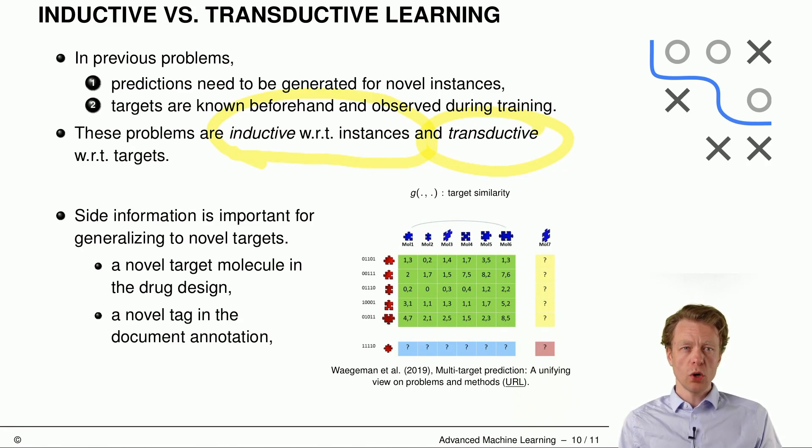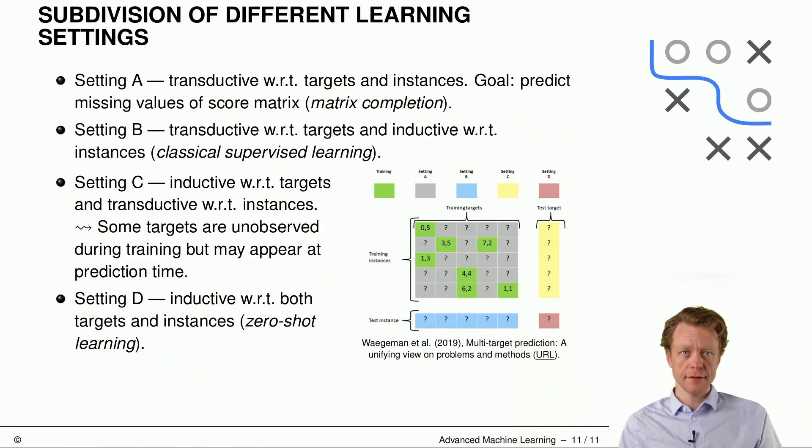If we want to predict novel targets, for example, in that molecule or in the documentation annotation example, so targets that we have not observed during training, then of course, we need some information about those targets or about the targets in total, so that we can somehow generalize to novel targets. So side information is very important here in that case.